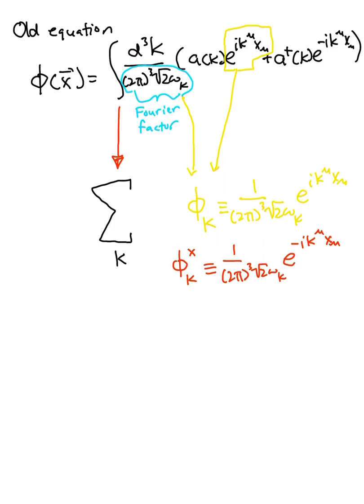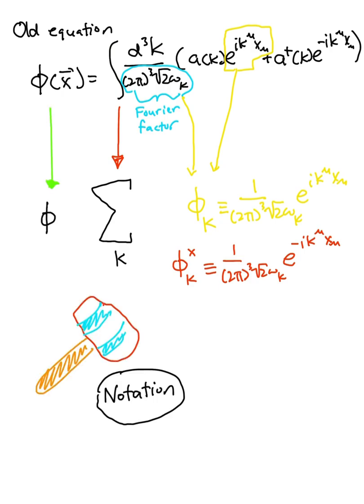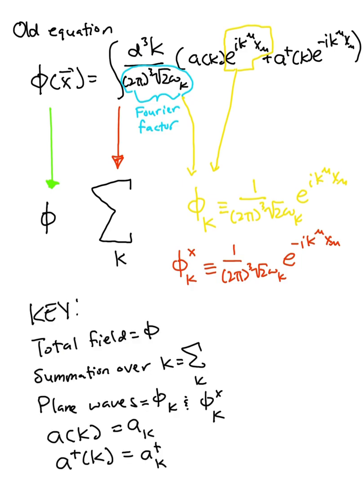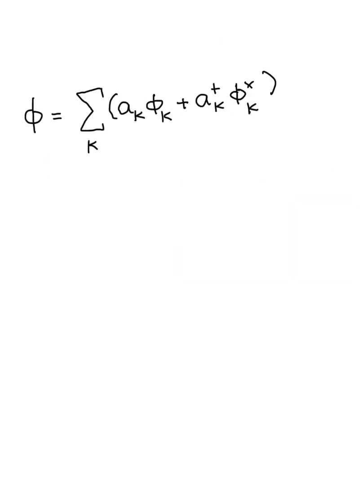This is abuse of notation, since we have the same symbol representing the total field in the plane waves. But to make it clear which one is which, we will not use a subscript of k for the total field. We now obtain this new simplified equation.